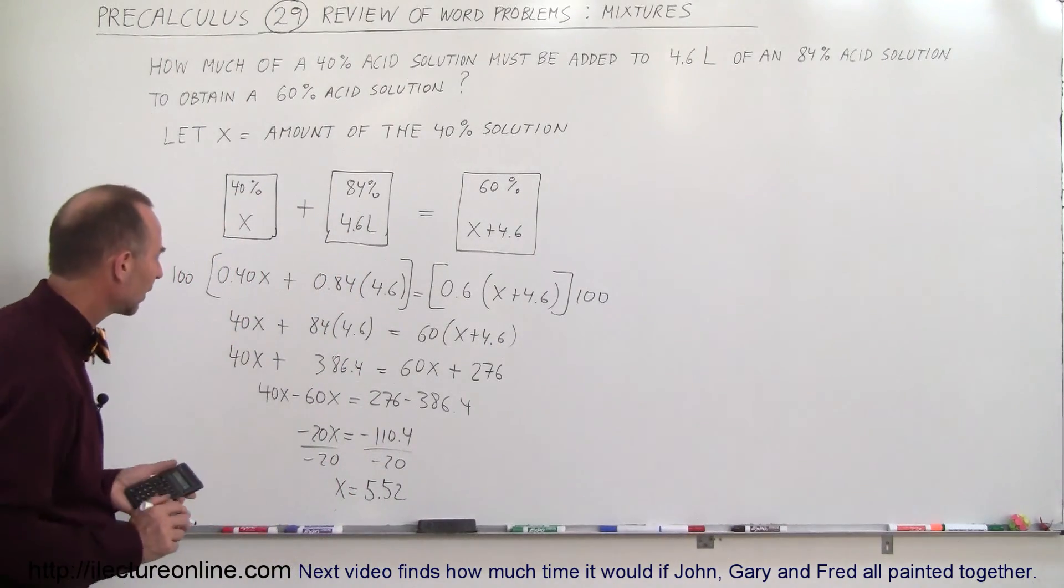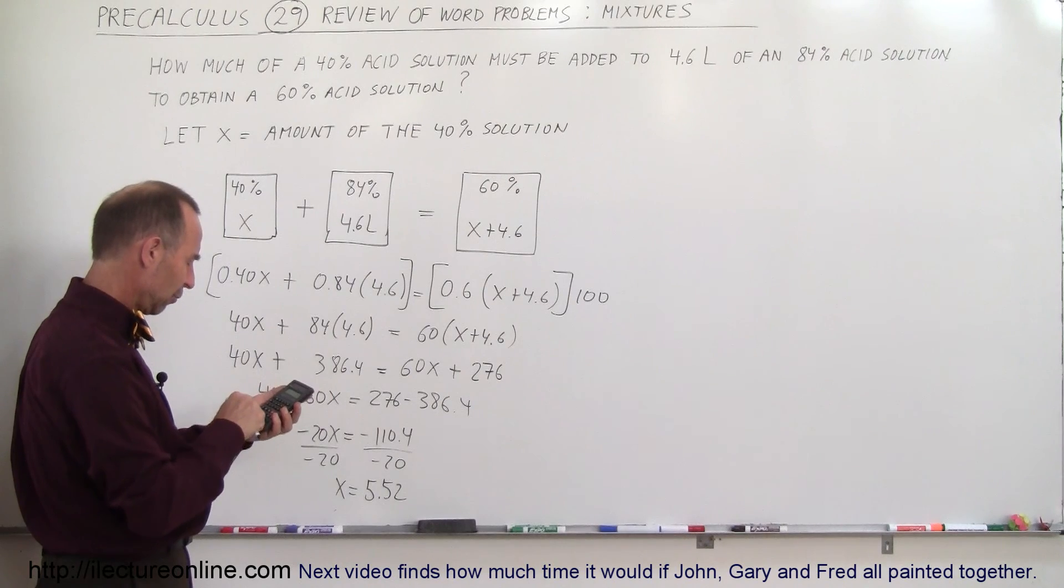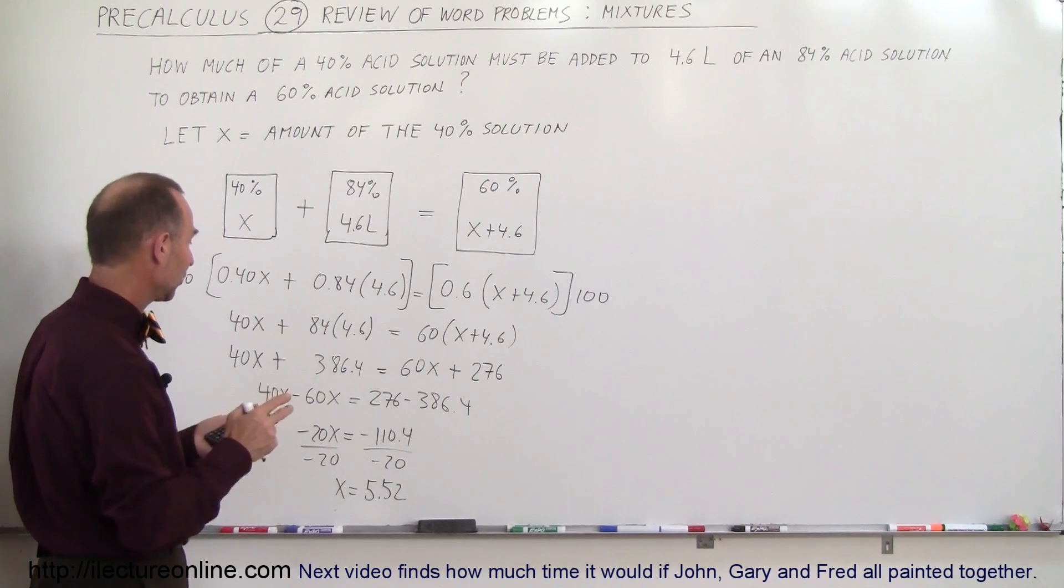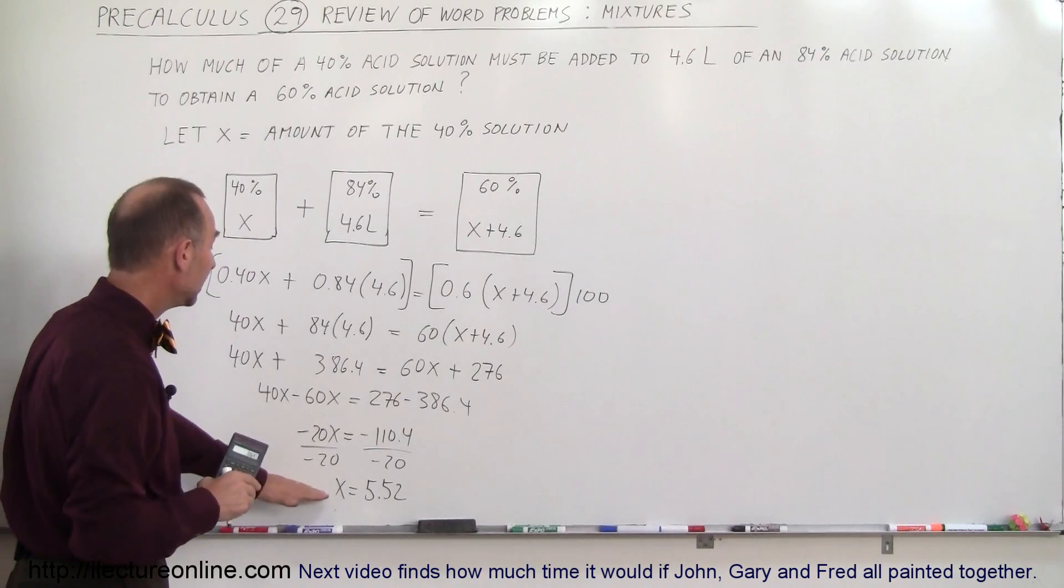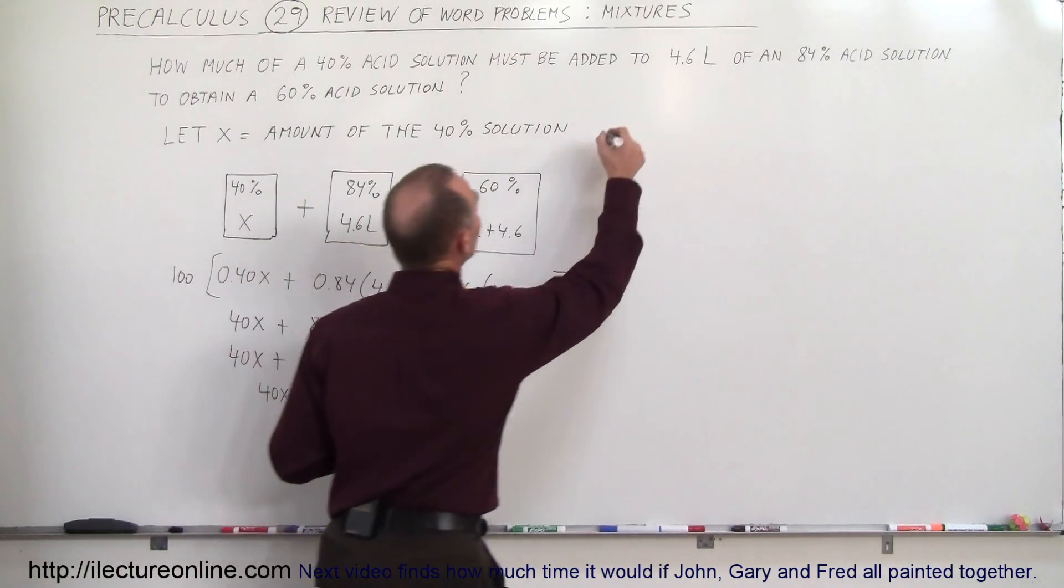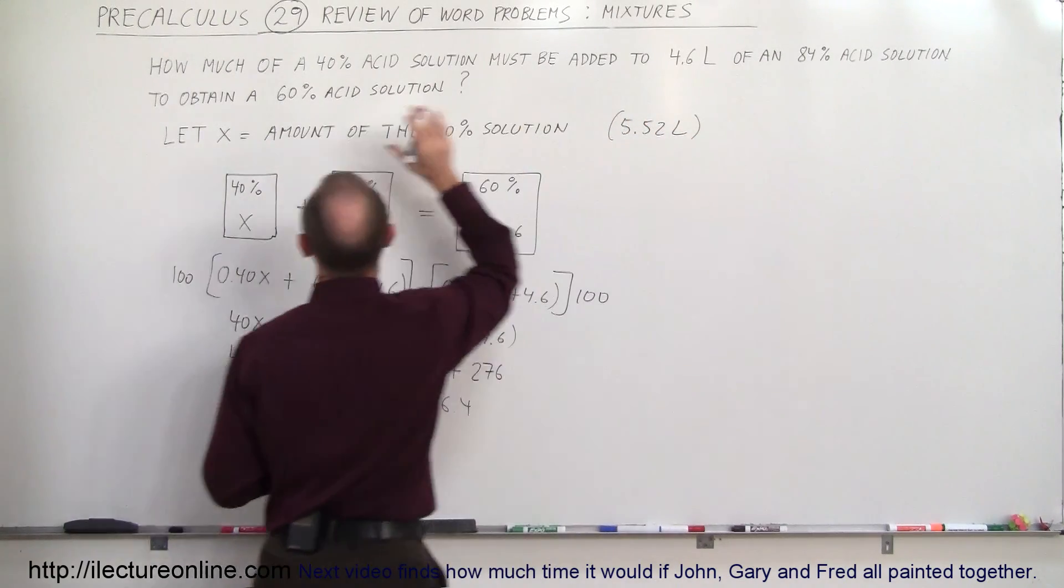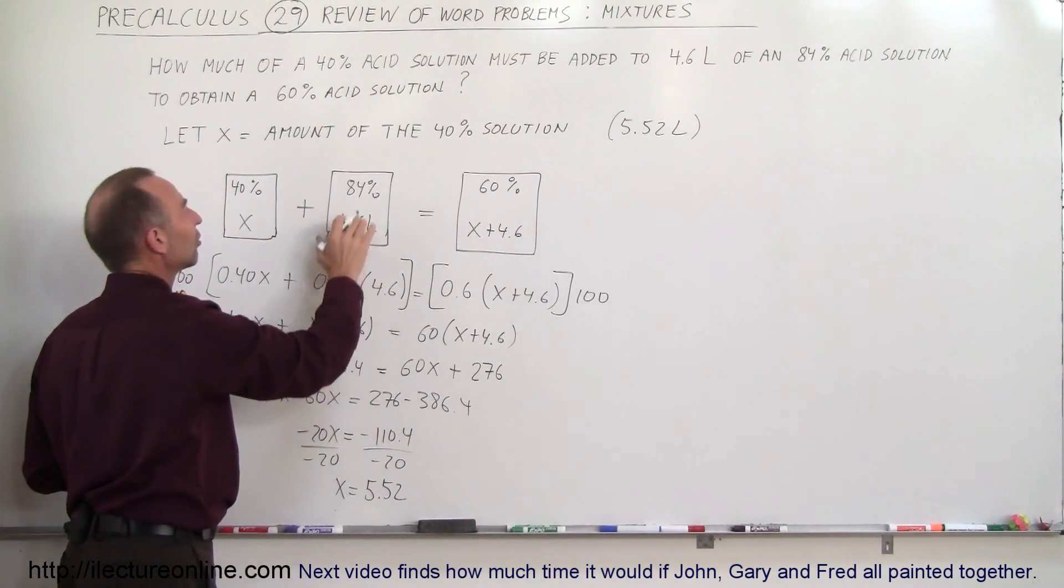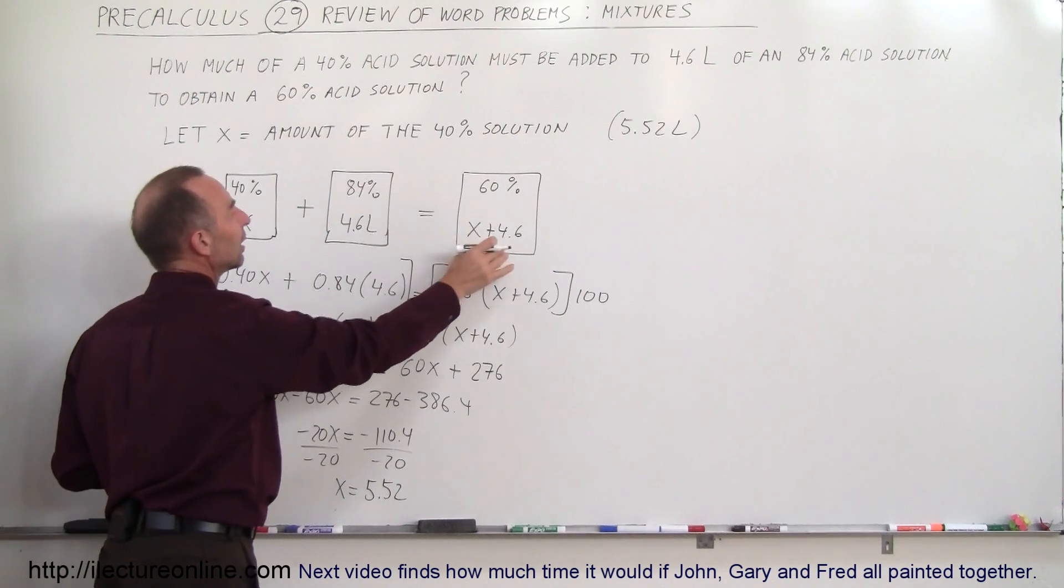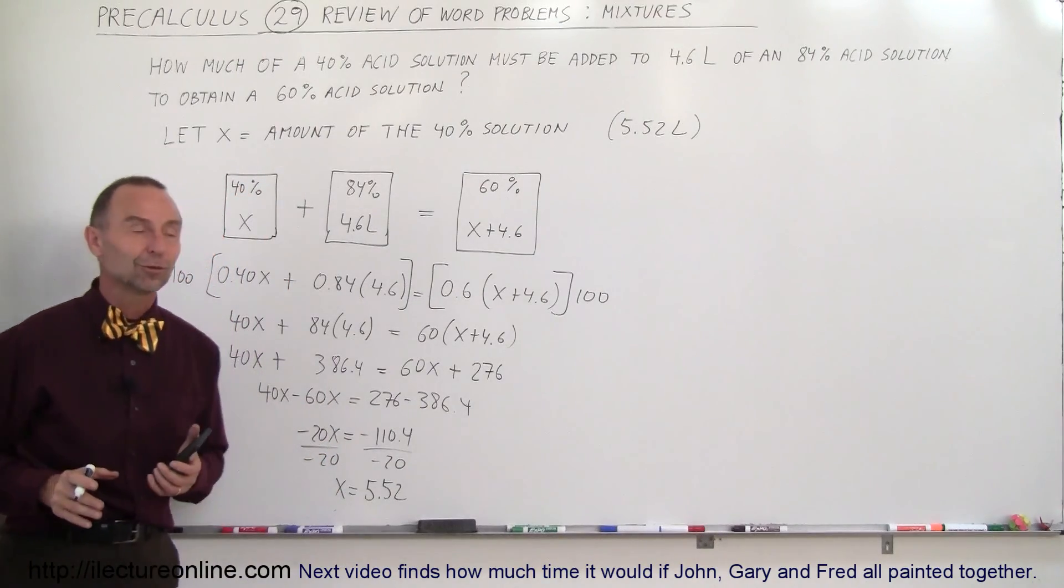Let's see if we got that right. I'm going to check that real quick. 84 times 4.6 equals 386.4, and that looks good. And so that would be the answer. So what we need is, we need 5.52 liters of the original solution added to 4.6 liters of 84% solution to give us 5.52 plus 4.6 liters of a 60% solution. And that's how we do that problem.